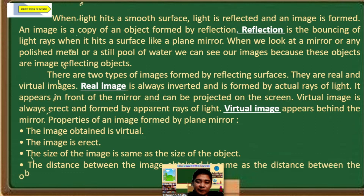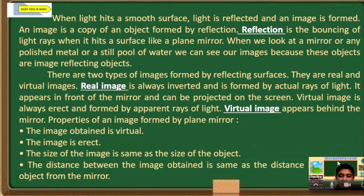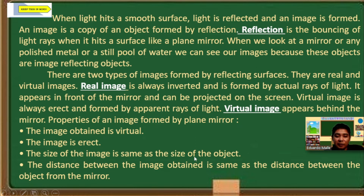Real image is always inverted and is formed by actual rays of light. It appears in front of the mirror and can be projected on a screen. Virtual image is always erect and formed by apparent rays of light. Virtual image appears behind the mirror. Properties of an image formed by a plane mirror: number one, the image obtained is virtual; the image is erect; the size of the image is the same as the size of the object. If your image in the mirror is smaller or larger than you, that is not a plane mirror. The distance between the image and the mirror is the same as the distance between the object and the mirror — if you are 1 meter away from the mirror, your image is 1 meter behind the mirror.